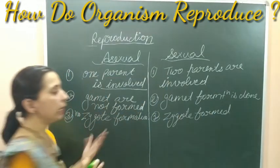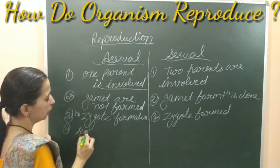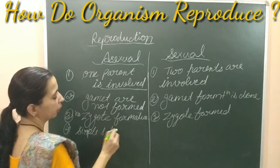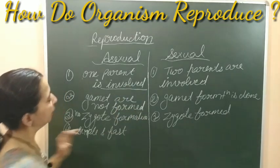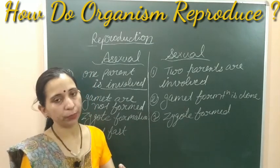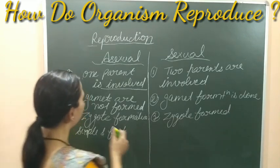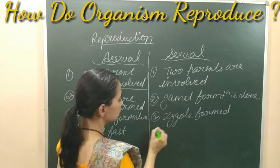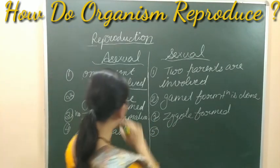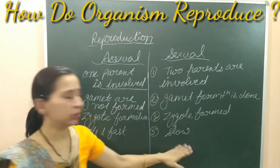Asexual reproduction is a simple and fast process because there is no gamete formation and no zygote formation. Sexual reproduction, on the other hand, is not simple and fast — it is a slow process that takes more time.